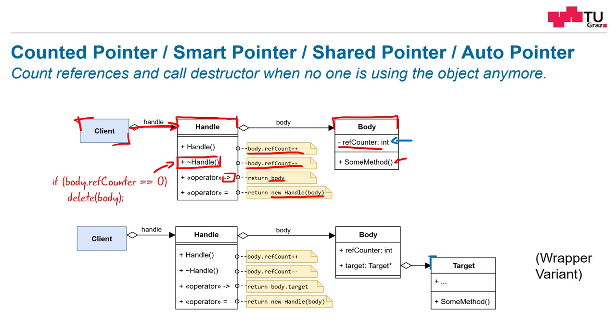So actually our object is now called the target. Here is the method which we want to call. And around this target we wrap the body. And this body has the reference counter, and it's a transparent proxy for our target. The handle doesn't change much. It works the same way as we discussed before. Only there is another wrapper in between the actual object which we want to call and the client.